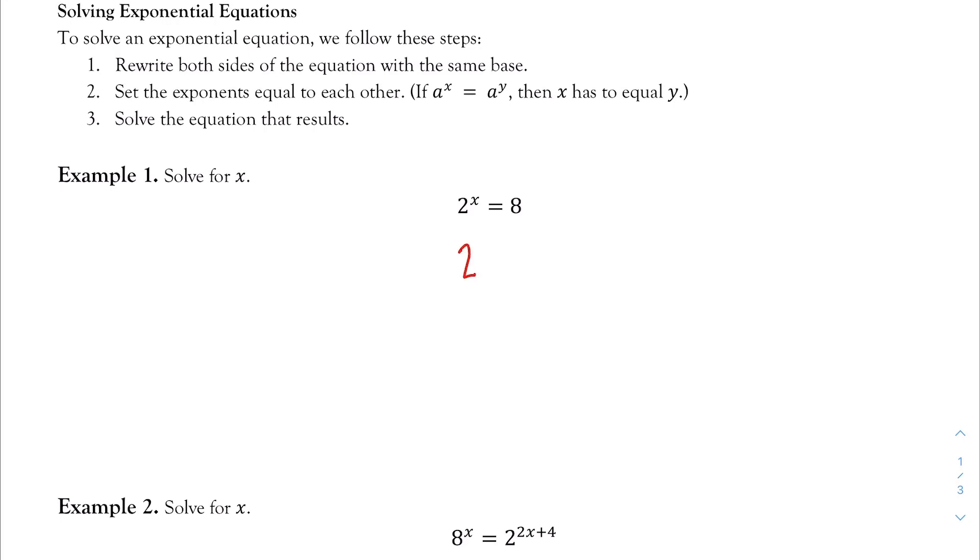Fortunately for us, I know that 8 is the same thing as 2 cubed. So now I can write 2 to the x power is equal to 2 cubed. Well from here, now that they have the same base, I'm allowed to set the exponents equal to each other. That is, I can say x is equal to 3. So I took the exponent on the left and on the right and I set them equal to each other. Well in this case, now I can solve for x, but luckily for us it's already solved for. We get x is equal to 3.